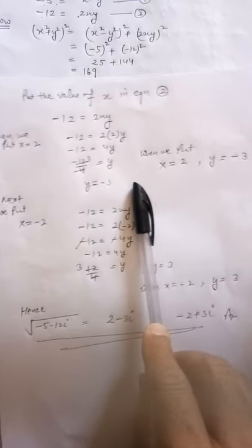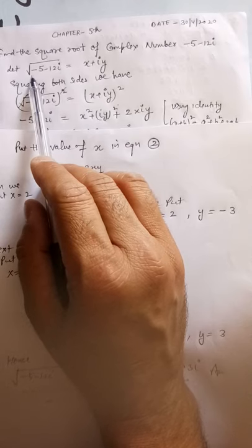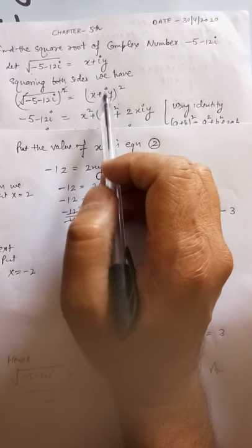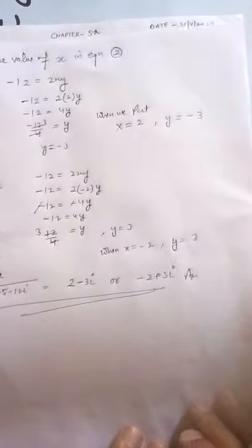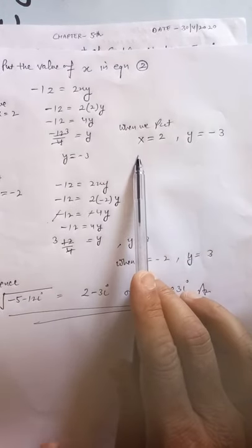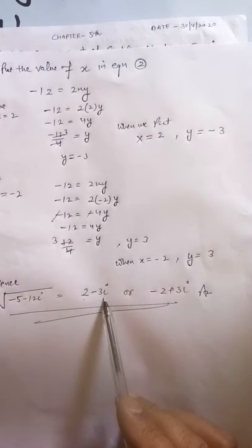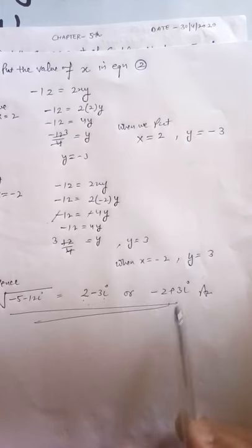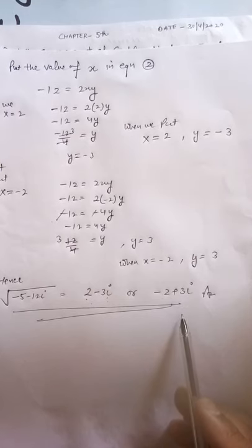When x is equal to 2, y is equal to minus 3. Put the value of x and y in the starting equation: square root of minus 5 minus 12i is equal to x plus i times y. When x is equal to 2 and y is equal to minus 3, we get 2 minus 3i. And when x is equal to minus 2 and y is equal to 3, the result is minus 2 plus 3i. This is the method to find the square root of a complex number. Thank you.